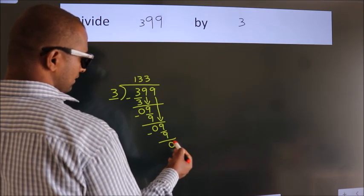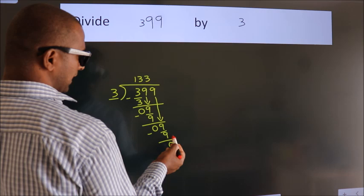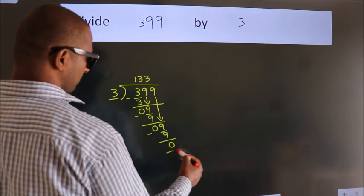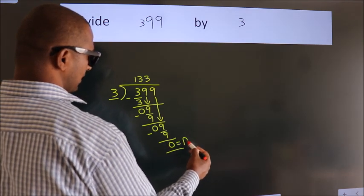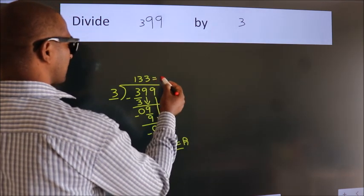After this, no more numbers to bring it down. So we stop here. This is our remainder. This is our quotient.